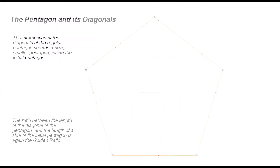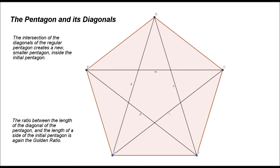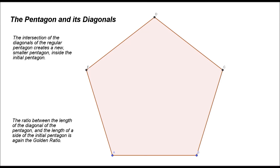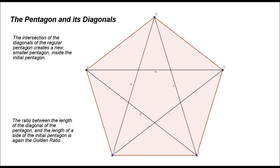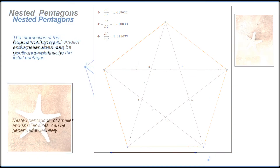Buckle up. There are still some more surprises waiting for us inside the pentagon. Let's draw next the diagonals of the regular pentagon. Like magic, this process creates a new, smaller pentagon inside the initial pentagon. It is worth having a closer look at the length of the diagonal of the pentagon and the length of a side of the initial pentagon. By doing this, one discovers that the ratio between these two segments is again the golden ratio. Even more, the ratio between the two segments determined by the intersection of two diagonals is also equal with the golden ratio.